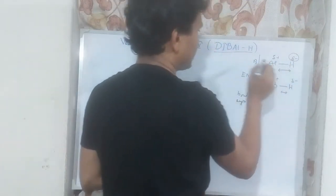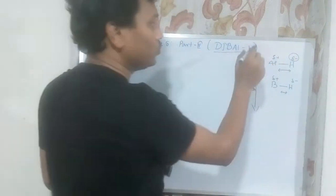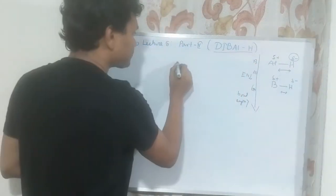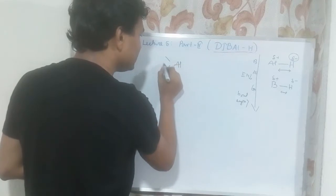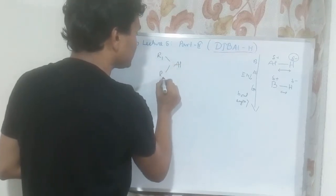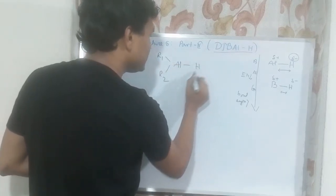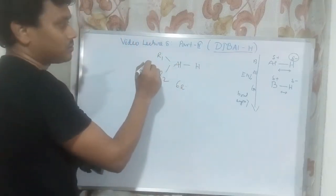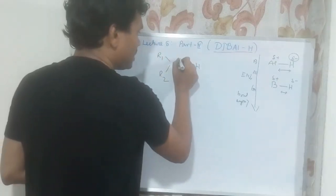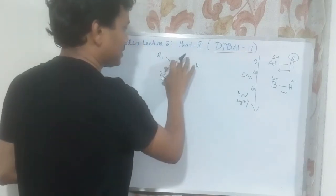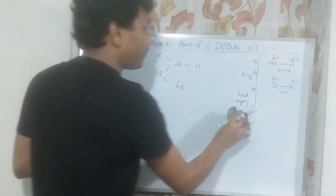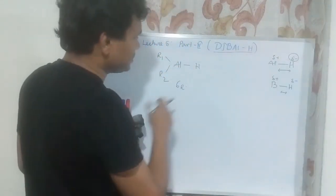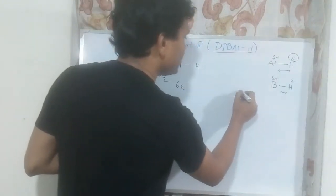Second, aluminum has a more electropositive character compared to boron, so it allows the hydrogen to concentrate more negative charge, which is one of the most important reasons for the excessively high reactivity of this reagent. Another important point is the Lewis acidity of aluminum, because this aluminum is in a tri-coordinated state — it is a six-electron species and needs electrons to satisfy its electron deficiency.